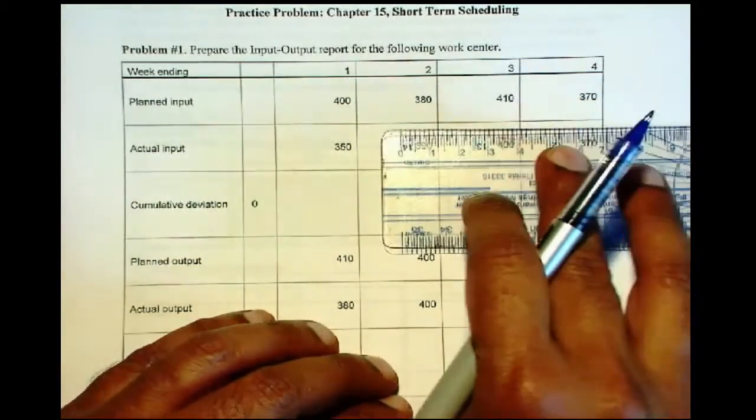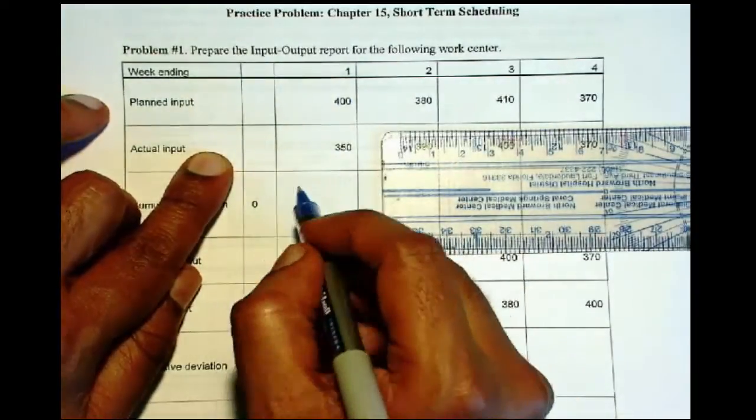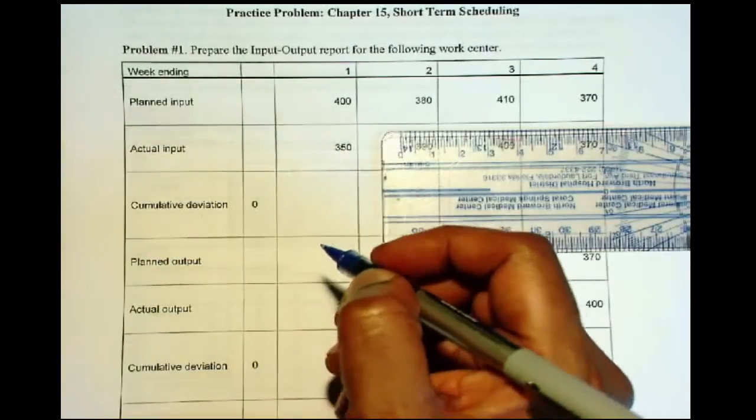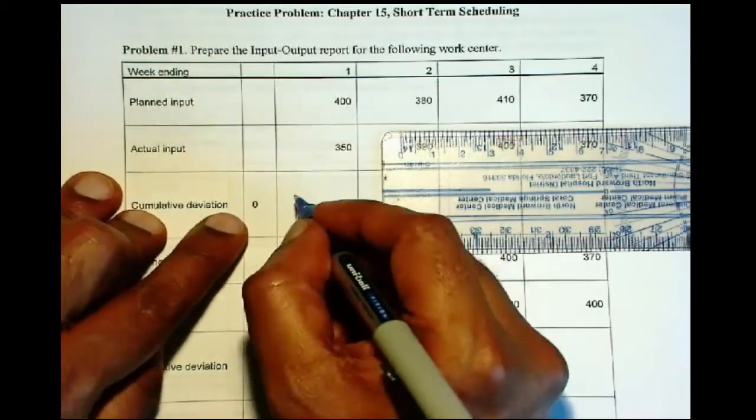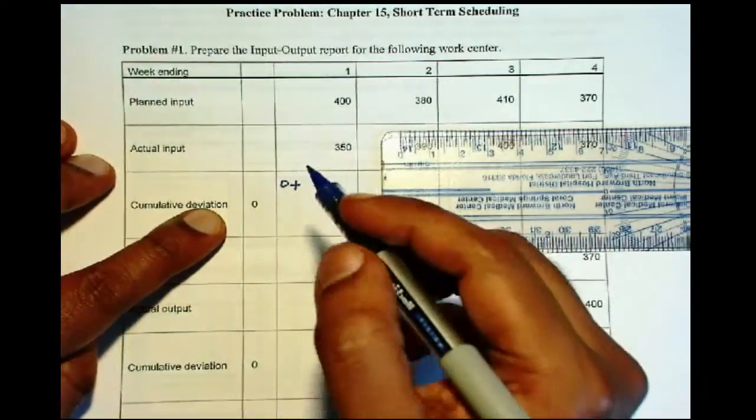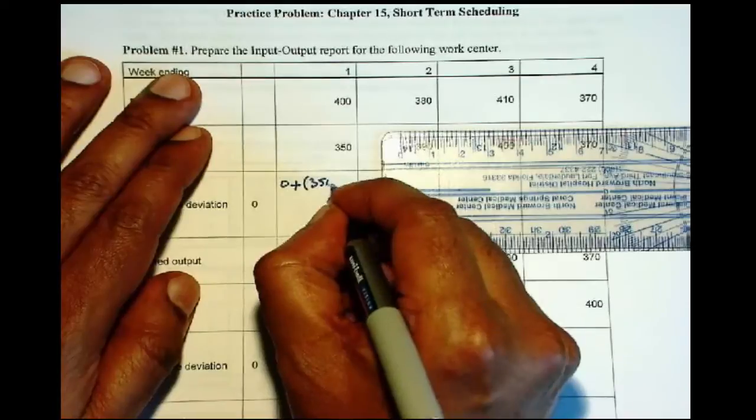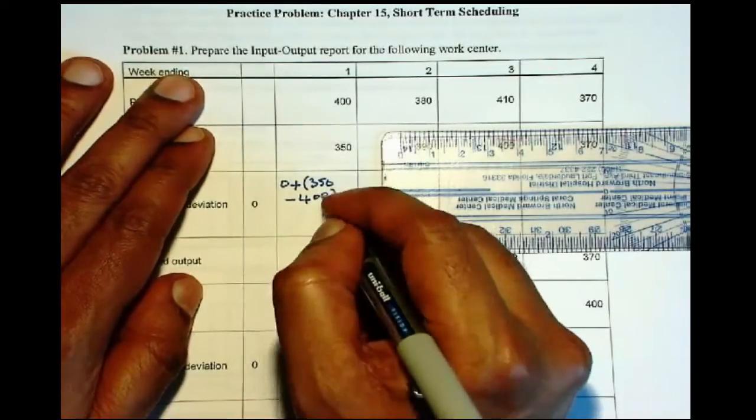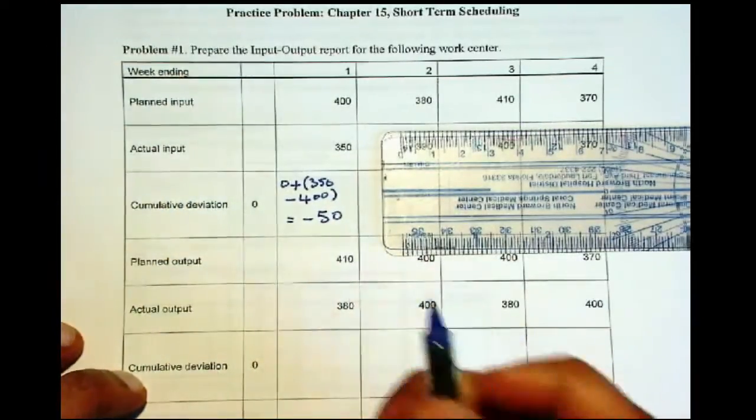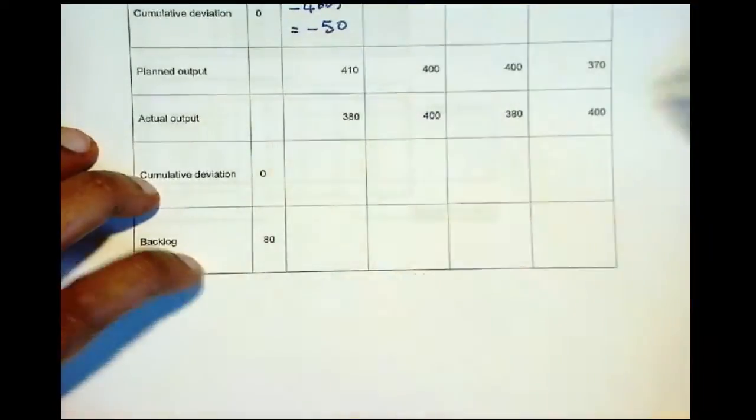Now as the actuals come in, this will be the one that you will fill out after the week is completed. Now if the actual input that came in is 350, then the cumulative deviation is you take the previous cumulative deviation. Here let's assume that it is 0, plus actual minus planned. So actual minus planned, this gives you minus 50. So at this point in time, the actual input is running below what was planned by 50 units.